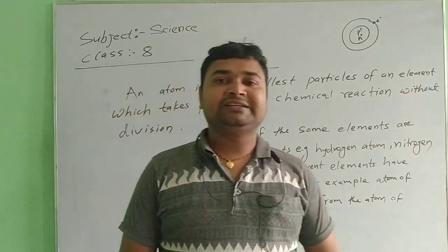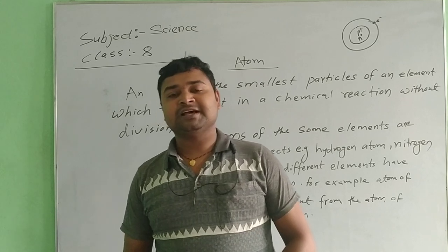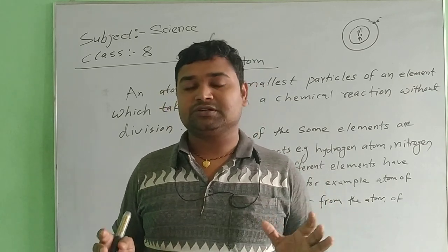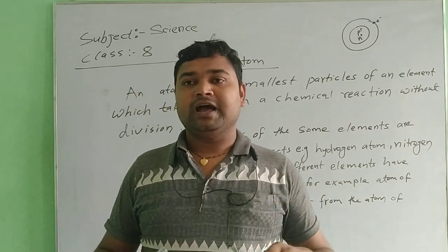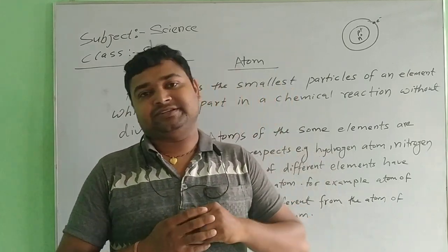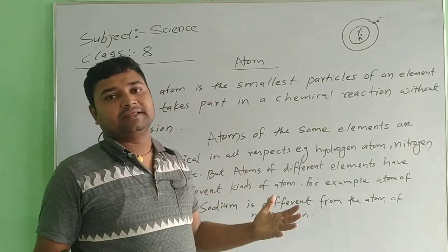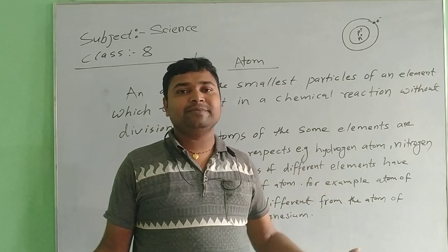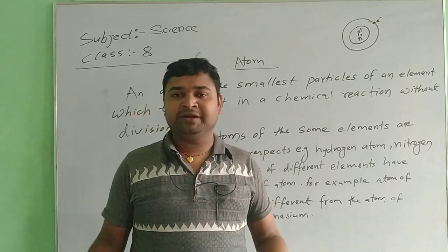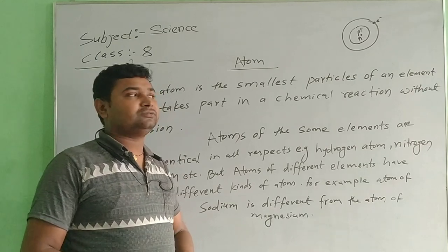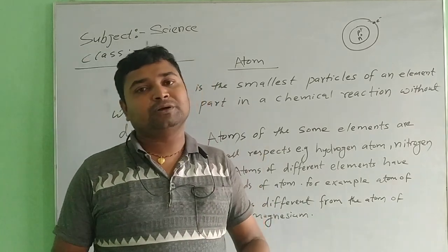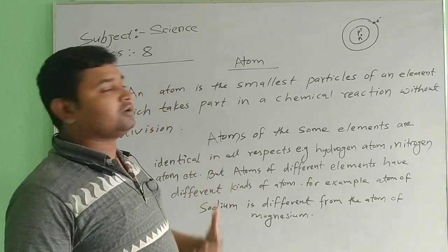Good morning students. Today we will discuss about the atom. In the previous class we studied about the construction of atomic structures, how the atomic structure is constructed. Today once again we will study about the atom. Till now 118 or 120 elements have been formed, some naturally occurring and some man-made. We have also seen the periodic table, and in the next class I will tell you about the periodic table.